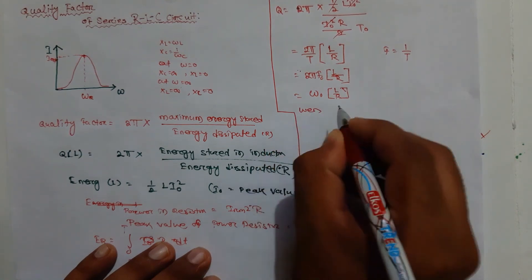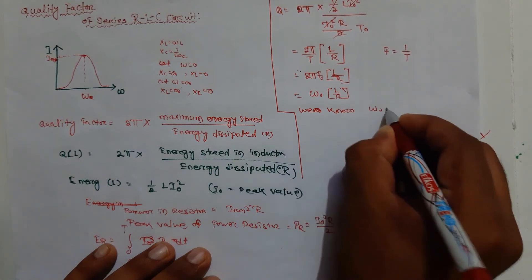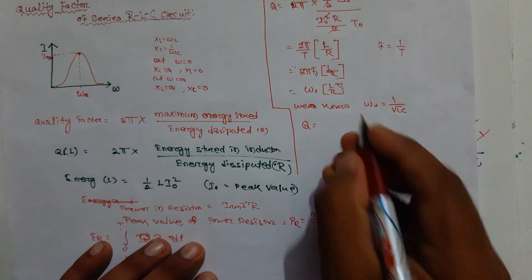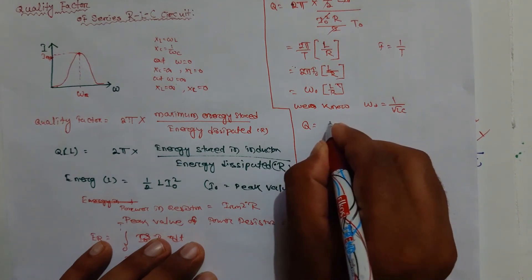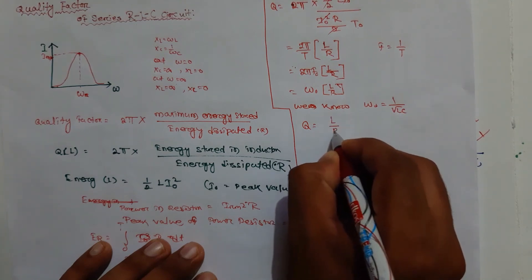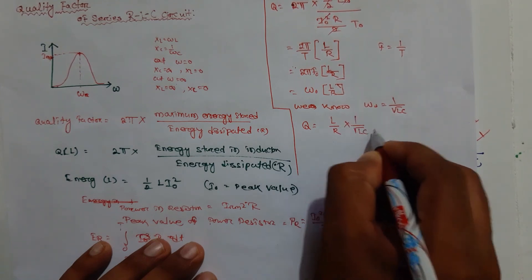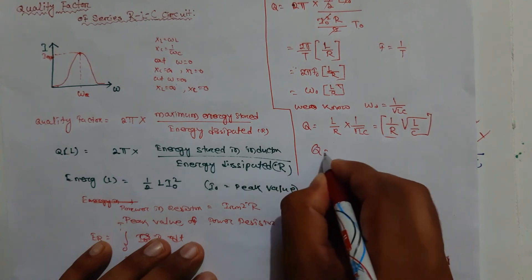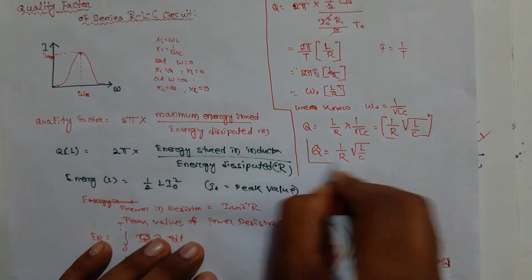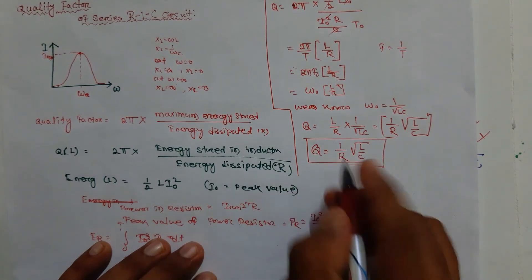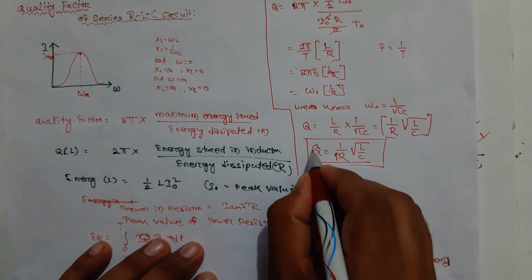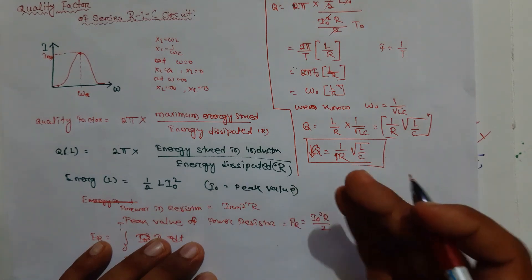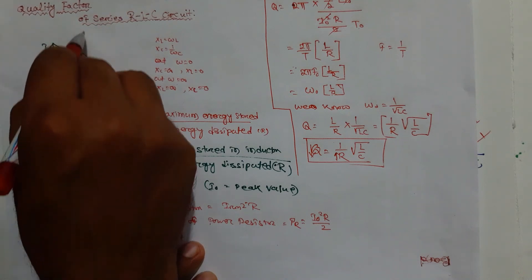We know omega_naught = 1/√(LC). Substituting this value, the quality factor becomes Q = (1/R)·√(L/C). At resonance, if the resistance value is high, the quality factor will decrease. So we need to adjust the resistance value to achieve more quality factor and therefore more sharpness.